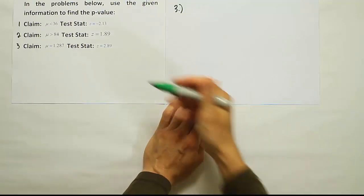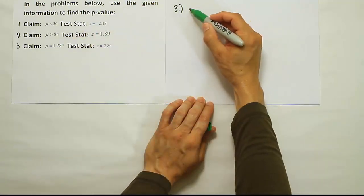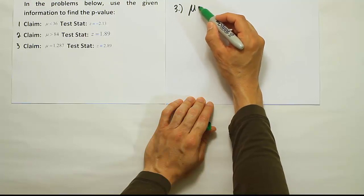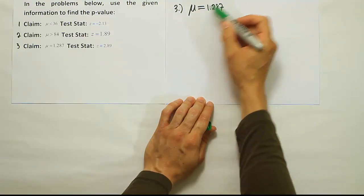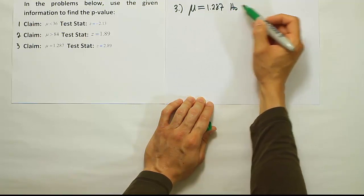Okay, so again, first thing you want to do is look at that claim and ask yourself, what does that tell us about the type of test that we're dealing with? Well, this claim is actually H₀, right?